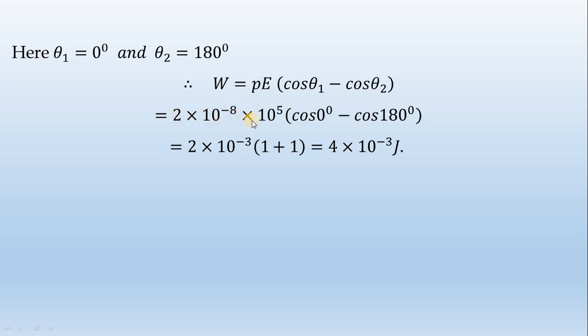That is 2 into 10 to the power minus 8 into 10 to the power 5. P E value. Cos 0 equals 1 and cos 180 equals minus 1, so 1 plus 1. Then 2 into 2 equals 4 into 10 to the power minus 3 joules.